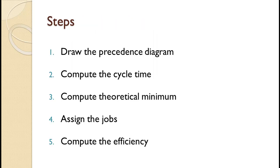There are five steps to assembly line balancing. Step 1: Draw the precedence diagram, which is used to make sure the tasks are assigned in the proper order. Step 2: Compute the cycle time — the time that each workstation will have to perform all of its assigned tasks. Note that steps 1 and 2 can be performed in either order. Step 3: Compute the theoretical minimum number of workstations required. Step 4: Assign the task to the appropriate workstations. Note that not all problems have a single correct solution. Step 5: Compute the resulting efficiency.